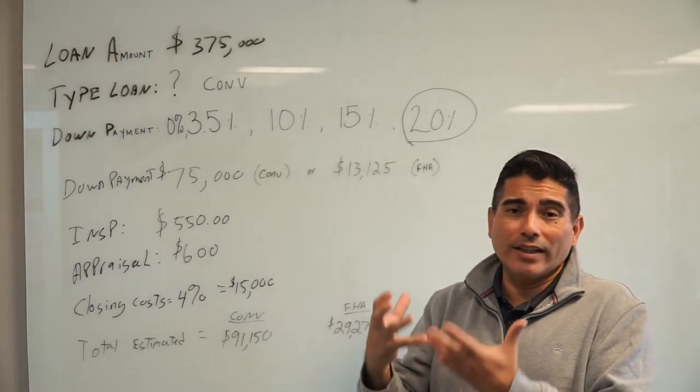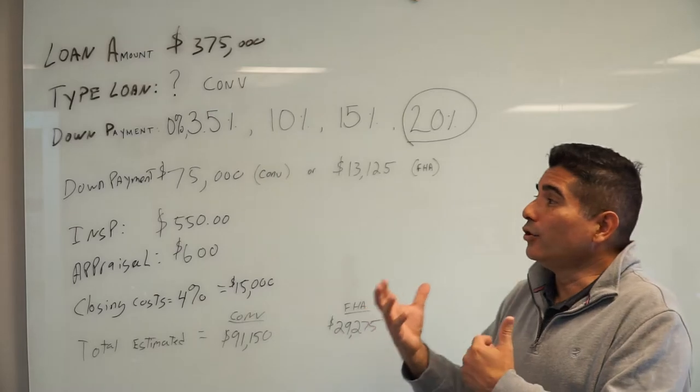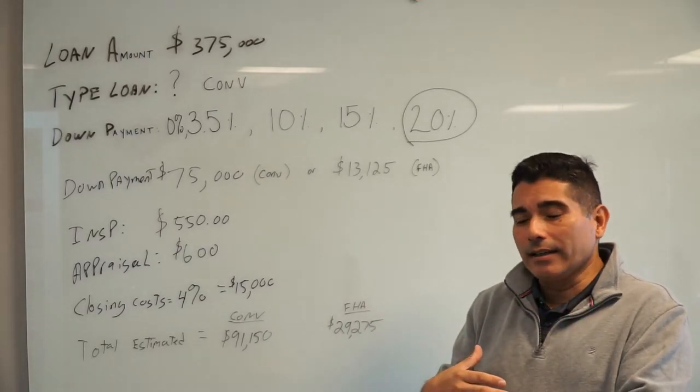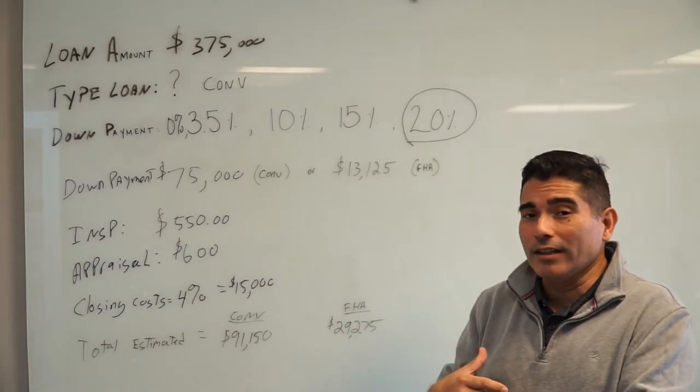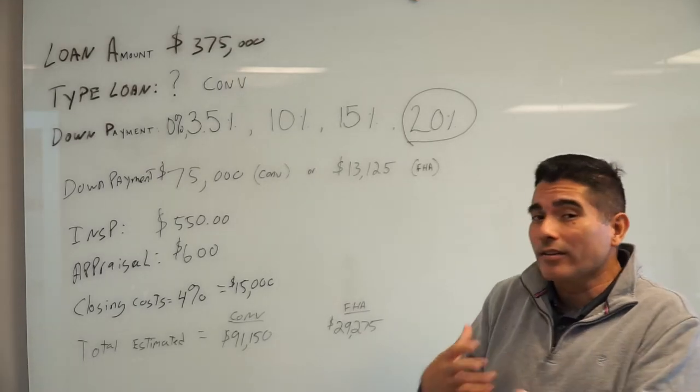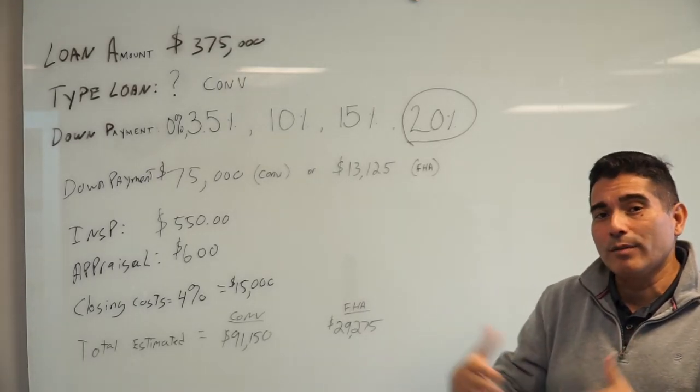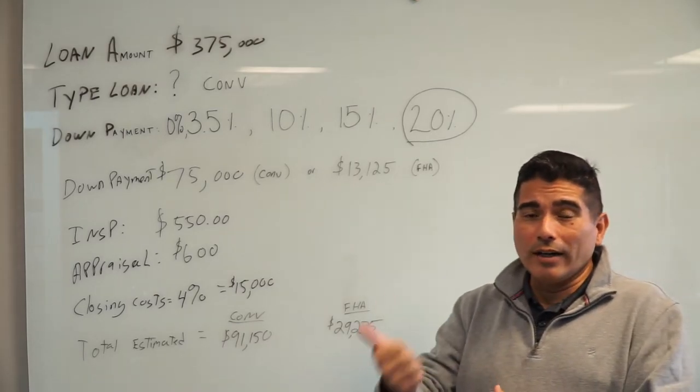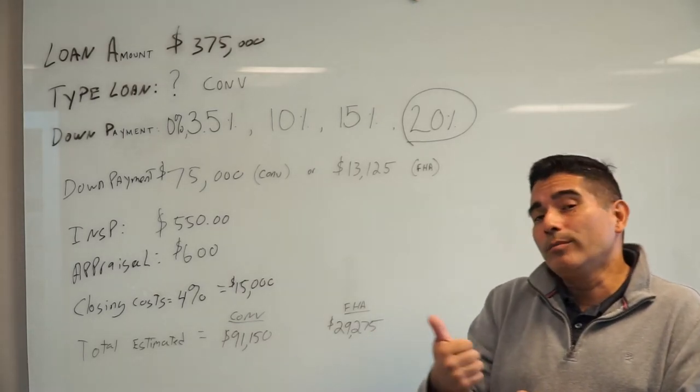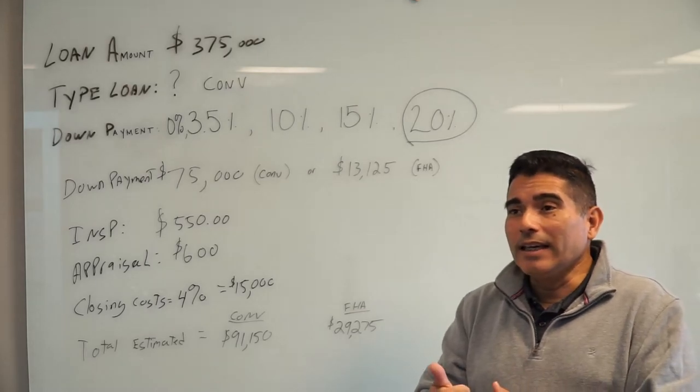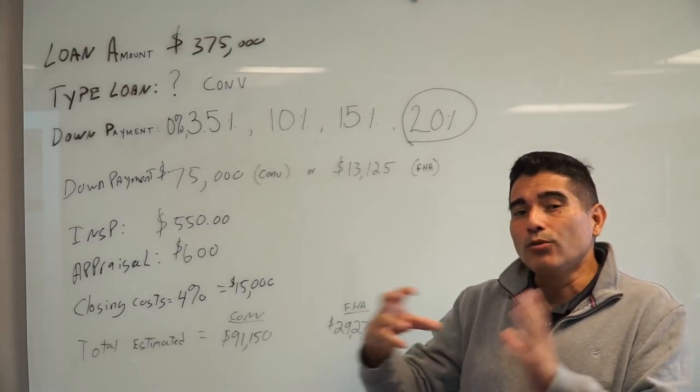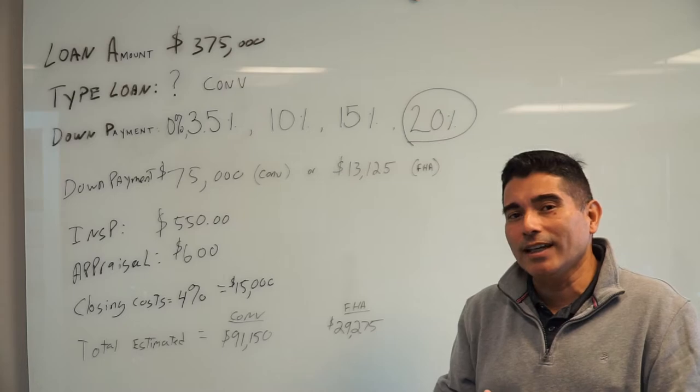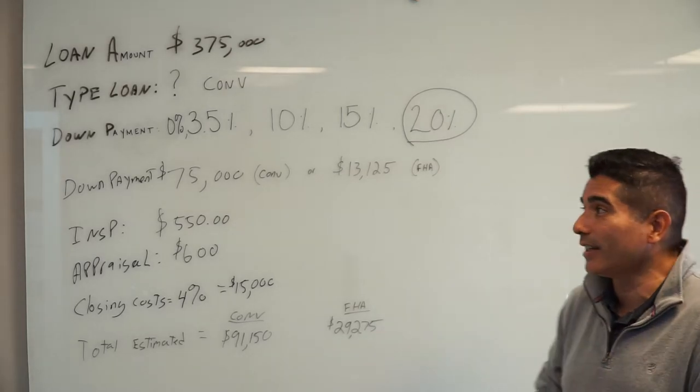But you could also be getting a FHA loan or you could get another type of loan that might require a different amount of down payment. For example, if you're a veteran and you are eligible for a VA loan, you could buy a home with zero percent down. If you're buying a home in a rural area, you could get a USDA loan that will also be zero percent down.